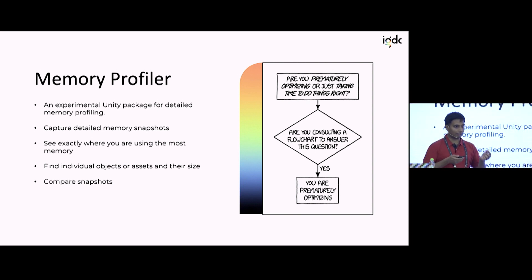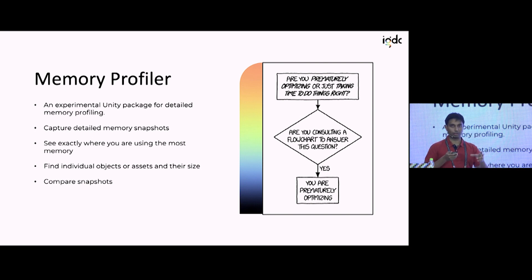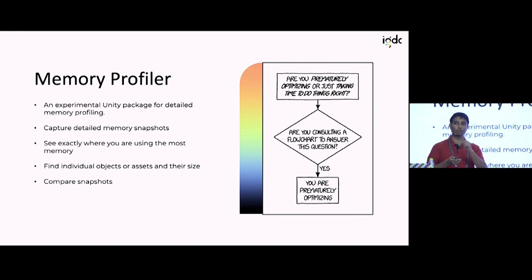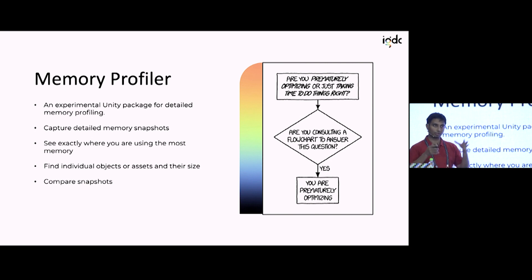The Memory Profiler is very good for detailed memory profiling. You can capture memory screenshots — pause the game, take a screenshot, and see everything that's in memory. You can even see specific objects in the Unity heap. One thing to note: it's still running in Unity, so you can capture objects in the Unity heap, but you won't see objects being pulled in through a third-party C++ plugin. As far as your game objects, scenes, and prefabs are concerned, you should find everything in the Memory Profiler.